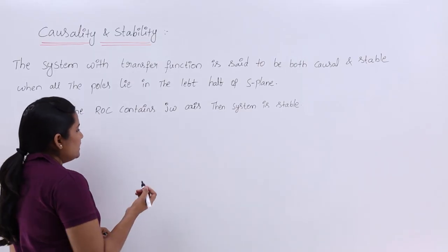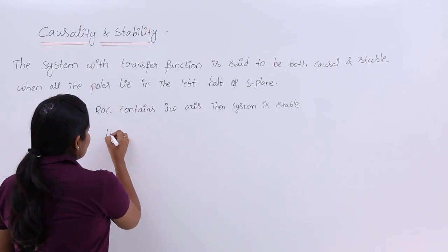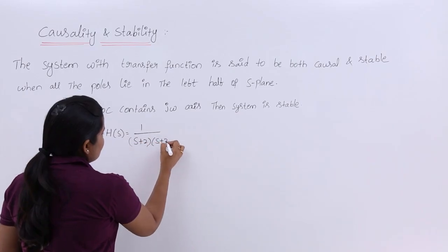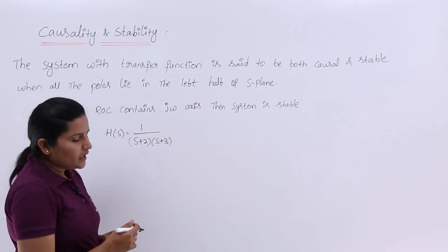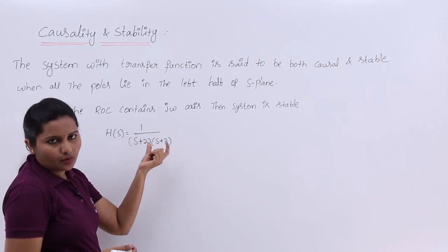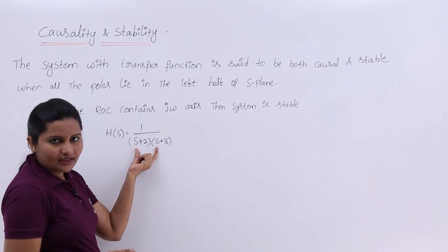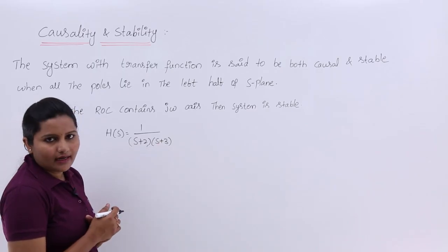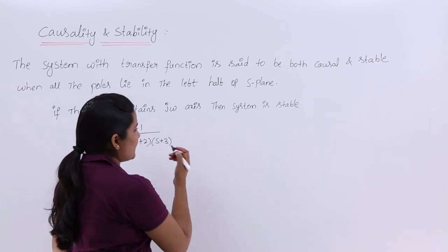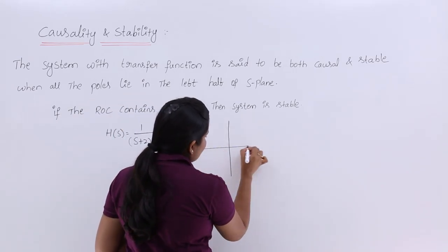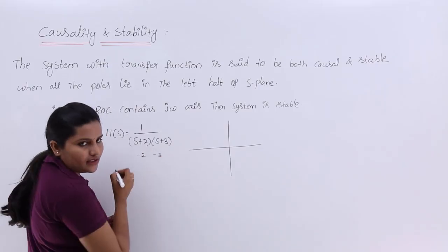For example, if they give a transfer function H(S) = 1/[(S+2)(S+3)], by equating the denominator factors to zero we get the poles. Equating these to zero gives the pole values. So for this example, the poles are at S = -2 and S = -3.